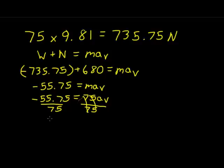Since we originally set negative as the force acting downward in this problem, the acceleration of negative 0.743 m/s² means the man's vertical acceleration is acting downward.